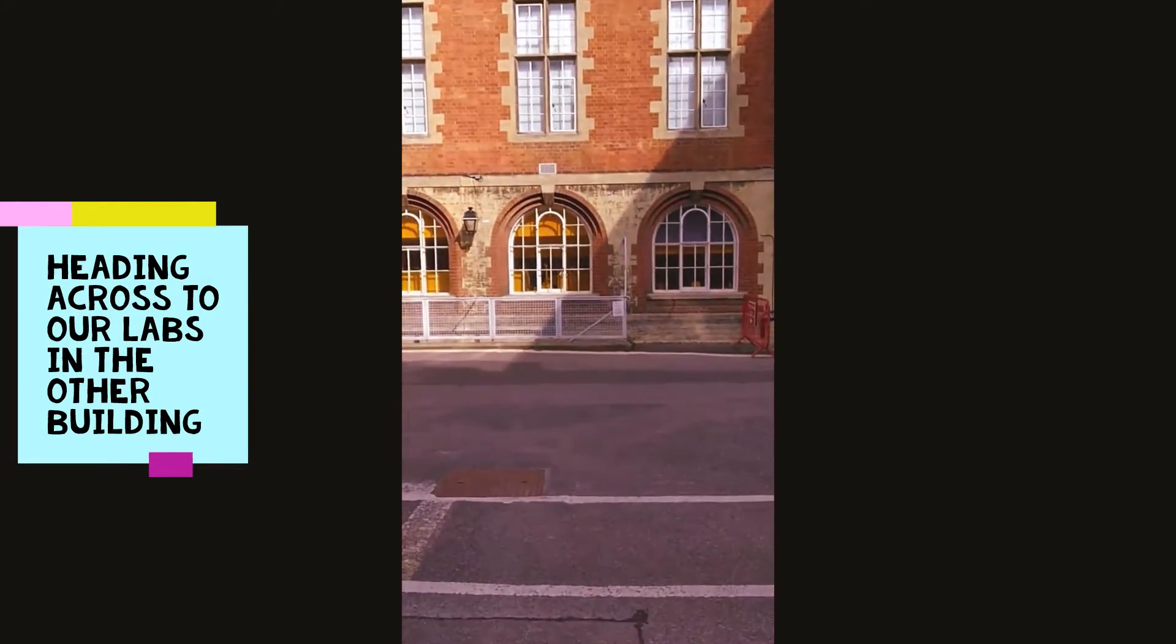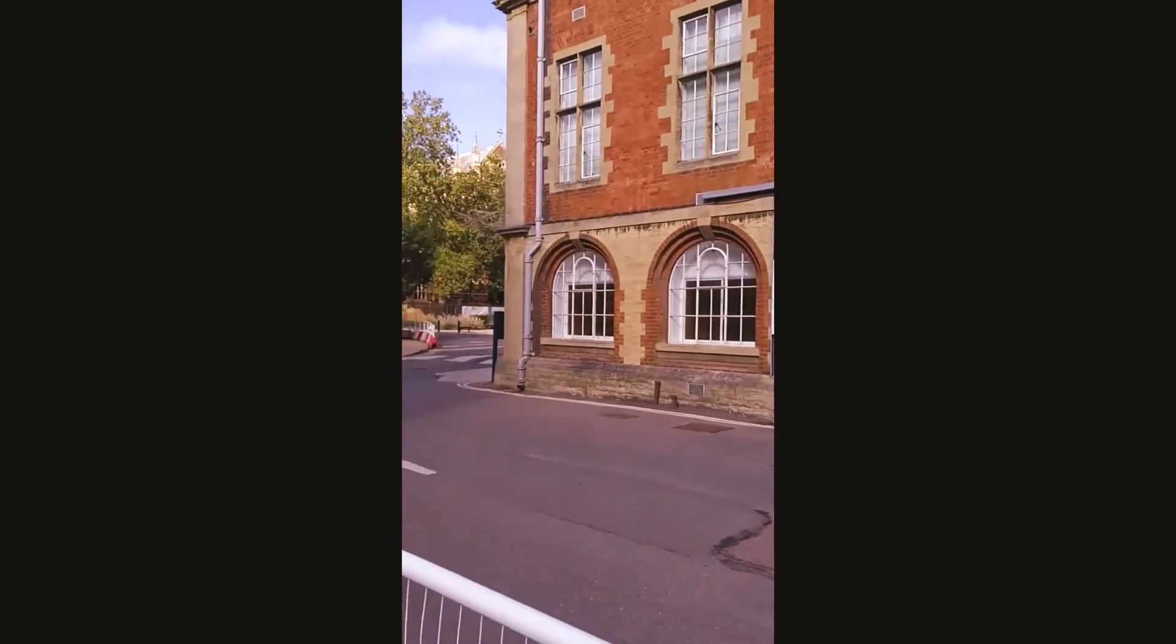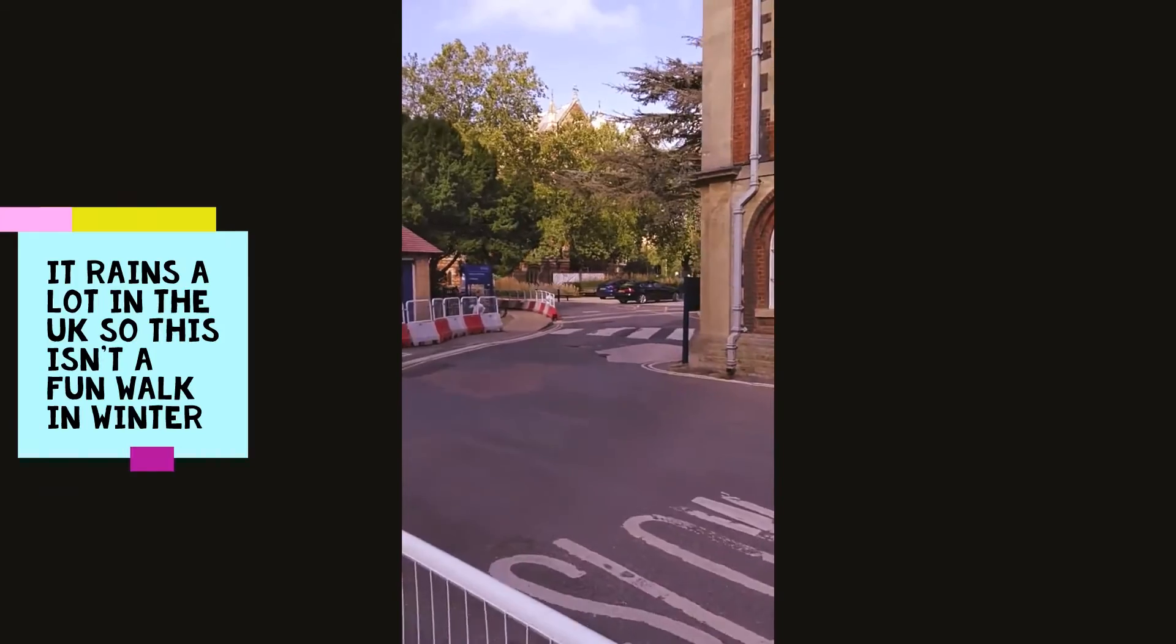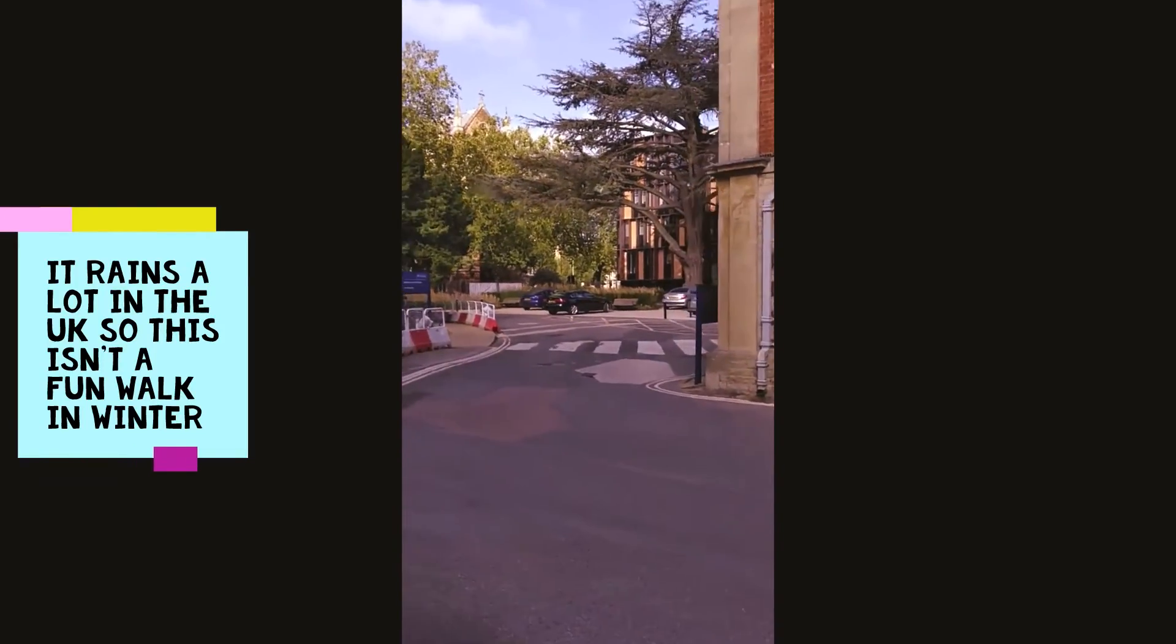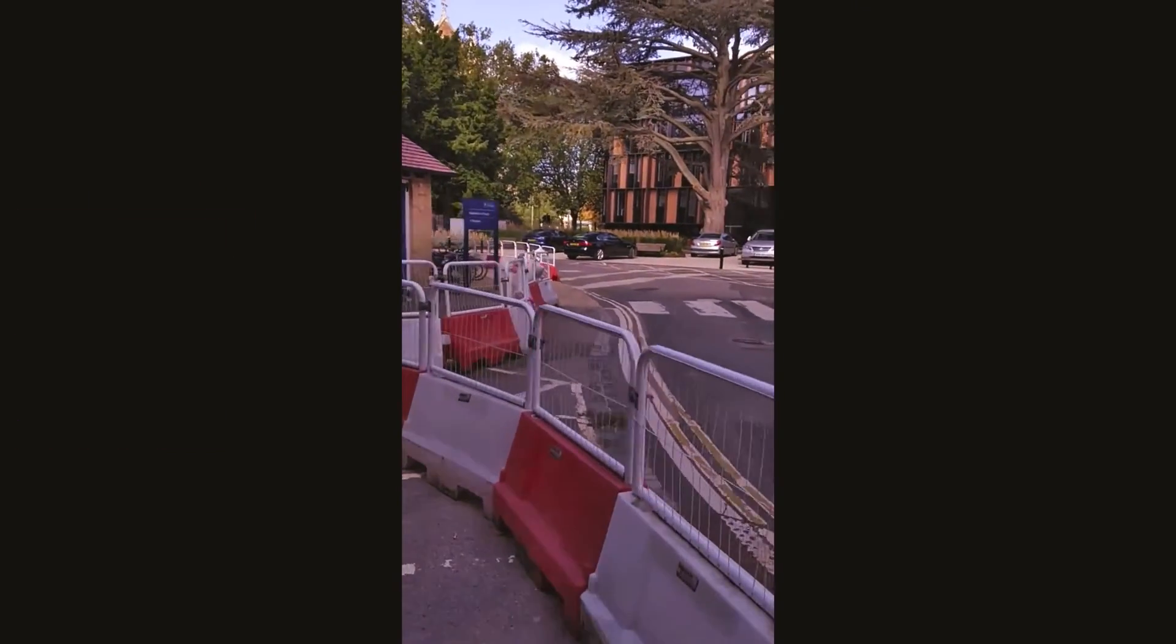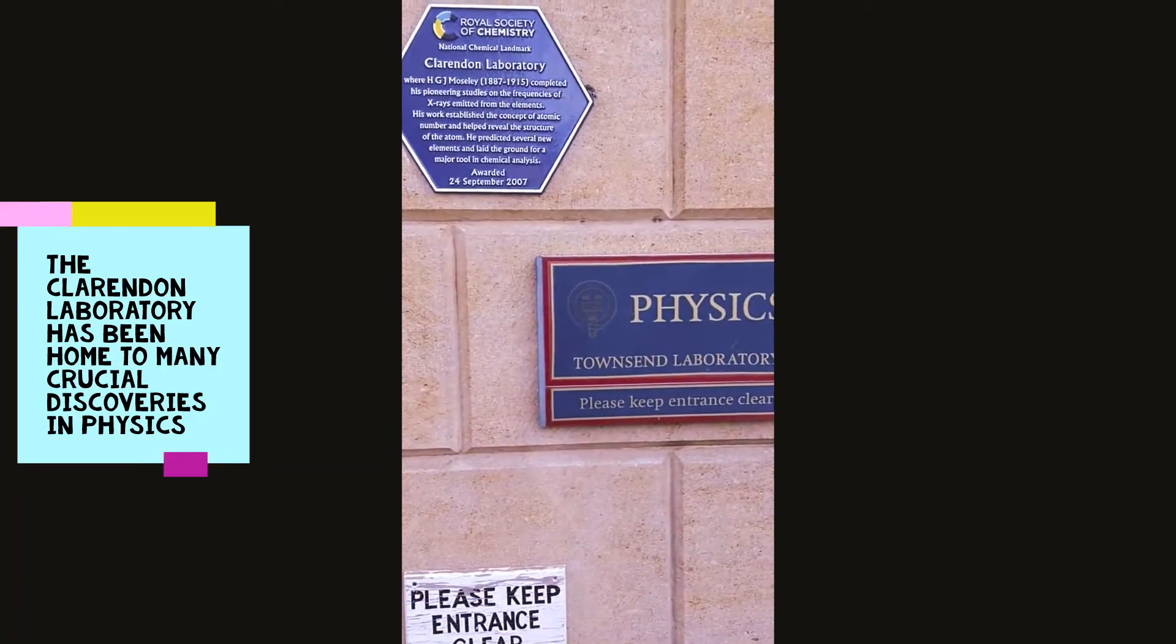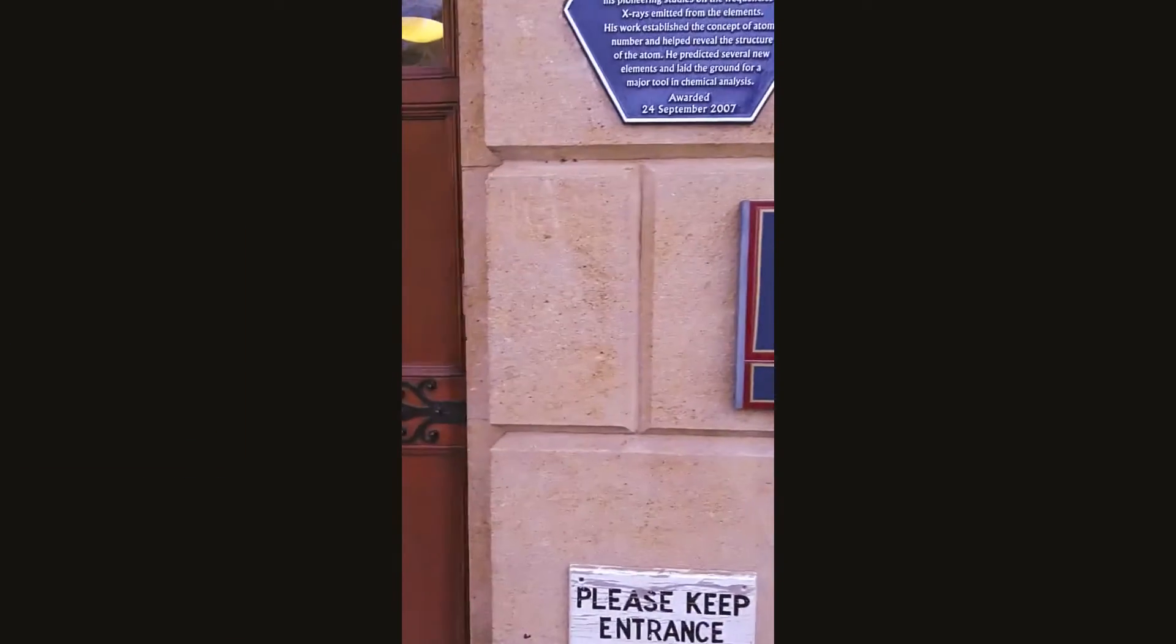So now we have to head across the road to our labs in the other building because we work in these super old buildings and so we're kind of spread out. It's a really nice day today as I'm walking across, but normally it rains so I typically take this journey a bit quicker. I run across, and if you're carrying any of your experimental stuff, you kind of have to shelter it from the rain. I'm really lucky to work here. The Oxford physics department has been home to so many amazing physics discoveries and had so many famous physicists work here, so it feels quite an honor to work in this building.